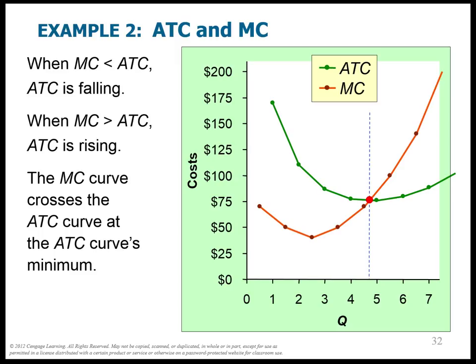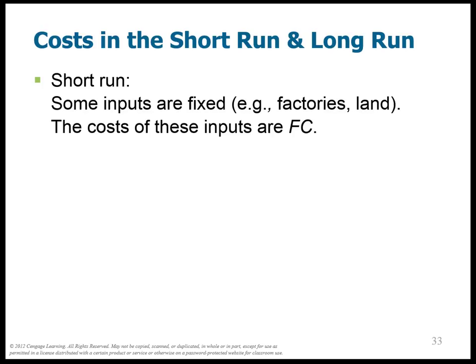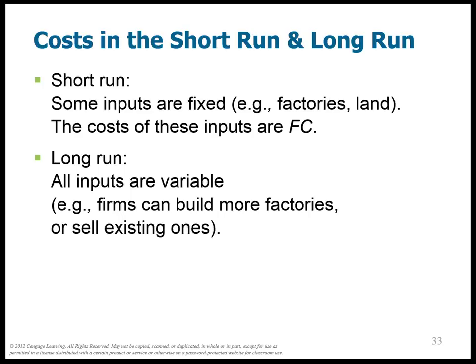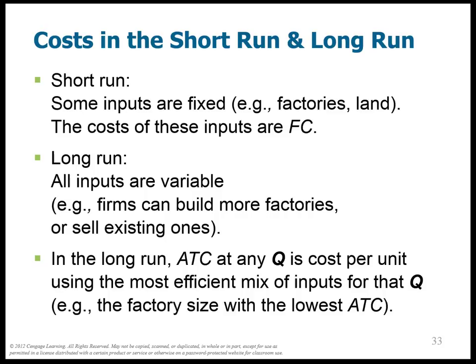Let's talk about short-run and long-run costs. In the short run, some inputs are still fixed, and we call those costs fixed costs. In the long run, however, all costs turn into variable costs. For example, let's say it takes a firm one year to build a new factory. The border between short run and long run is one year — in less than one year, the number of factories is fixed, but after one year, the firm can build additional factories or sell existing ones. So it becomes a variable cost and we're in the long run. The long-run ATC at any quantity is the cost per unit using the most efficient mix of inputs for that quantity — essentially the lowest ATC given that factory size can change.